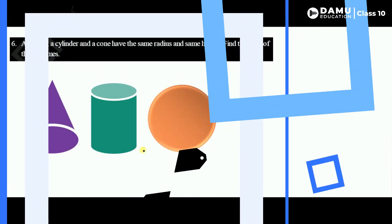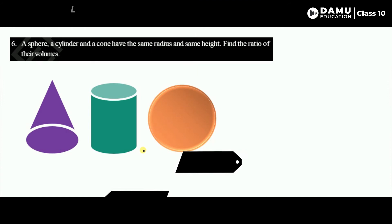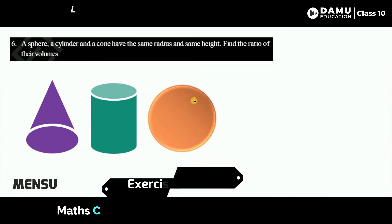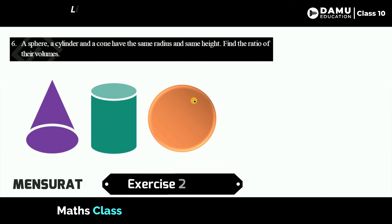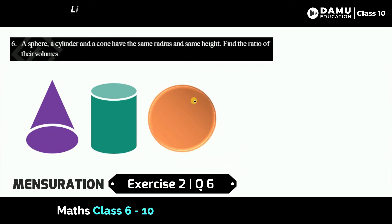Hello friends, welcome to Dhammo Education. If not yet subscribed, please subscribe and click the bell icon. In this module we are going to discuss our sixth question: a sphere, a cylinder and a cone have the same radius and the same height. Find the ratio of their volumes.